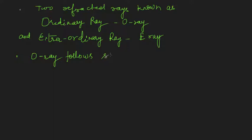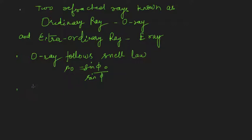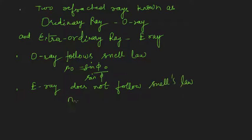We call it the ordinary ray because it follows Snell's law, just as usual when light is incident on a glass plate. Its refractive index n₀ is given by sin(φ₀) / sin(φ). The E-ray is called extraordinary because it does not follow Snell's law, so nₑ ≠ sin(φₑ) / sin(φ).